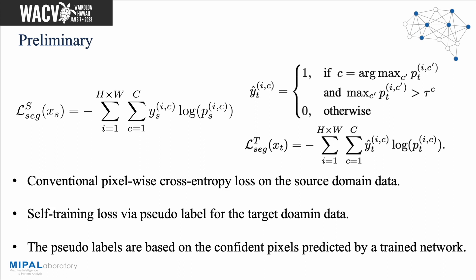For the preliminary setup, two loss functions are employed. One is a conventional pixel-wise cross-entropy loss applied on the source domain data. For the target domain, since no labels are provided, the self-training method explained earlier is applied using the generated pseudo-labels.